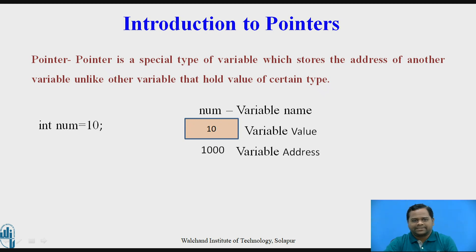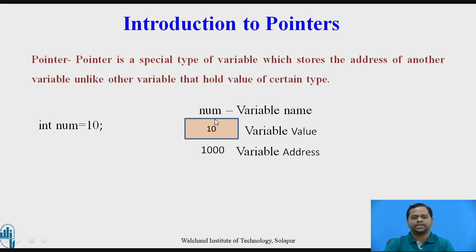First, what exactly is a pointer? A pointer is a special type of variable which stores the address of another variable, unlike other variables that hold a value of a certain type. For example, when I declare int num = 10, this is what exactly happens in C language: 10 is the variable value, num is the variable name, and 1000 is the variable address. In C language the address is actually a hexadecimal number, but here we are assuming 1000.